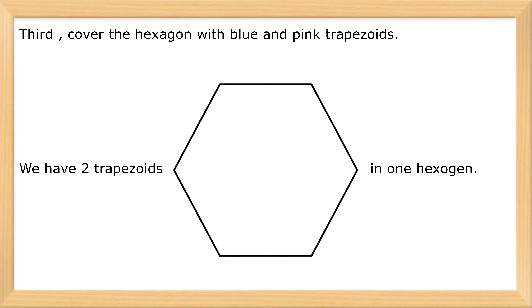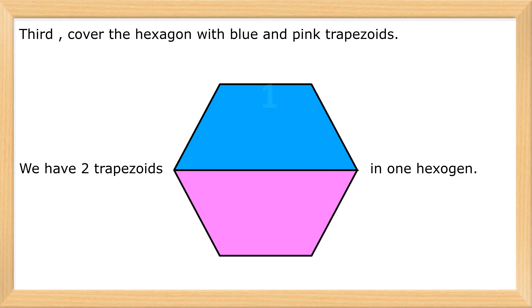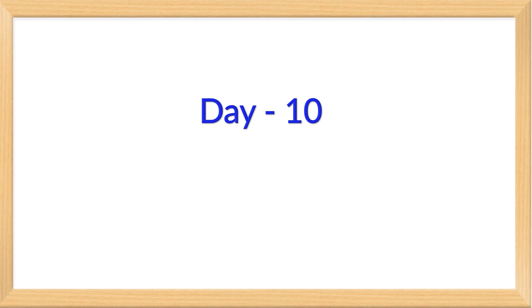Third, cover the hexagon with blue and pink trapezoids. One, two. We have two trapezoids in one hexagon.